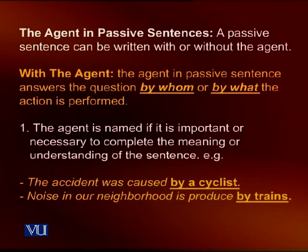Examples of passive sentences with the agent named: 'The accident was caused by a cyclist' — here 'by a cyclist' is the agent. 'Noise in our neighborhood is produced by trains.' 'The man was killed by his neighbor.' In all three sentences, these are passive sentences where the agent is specified.